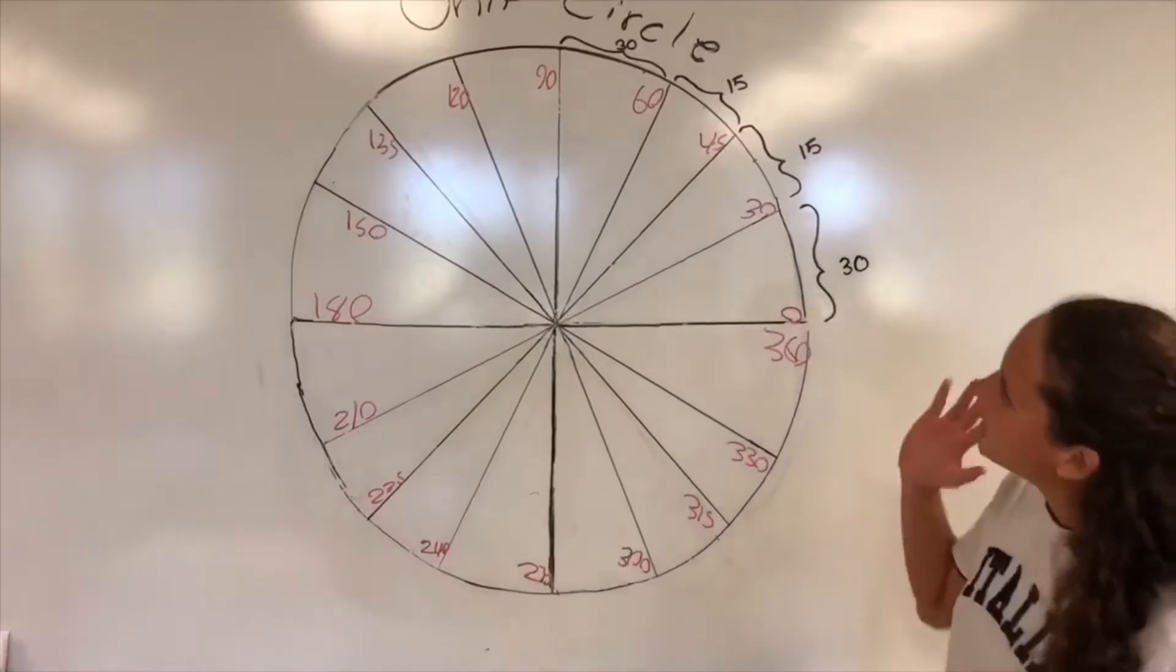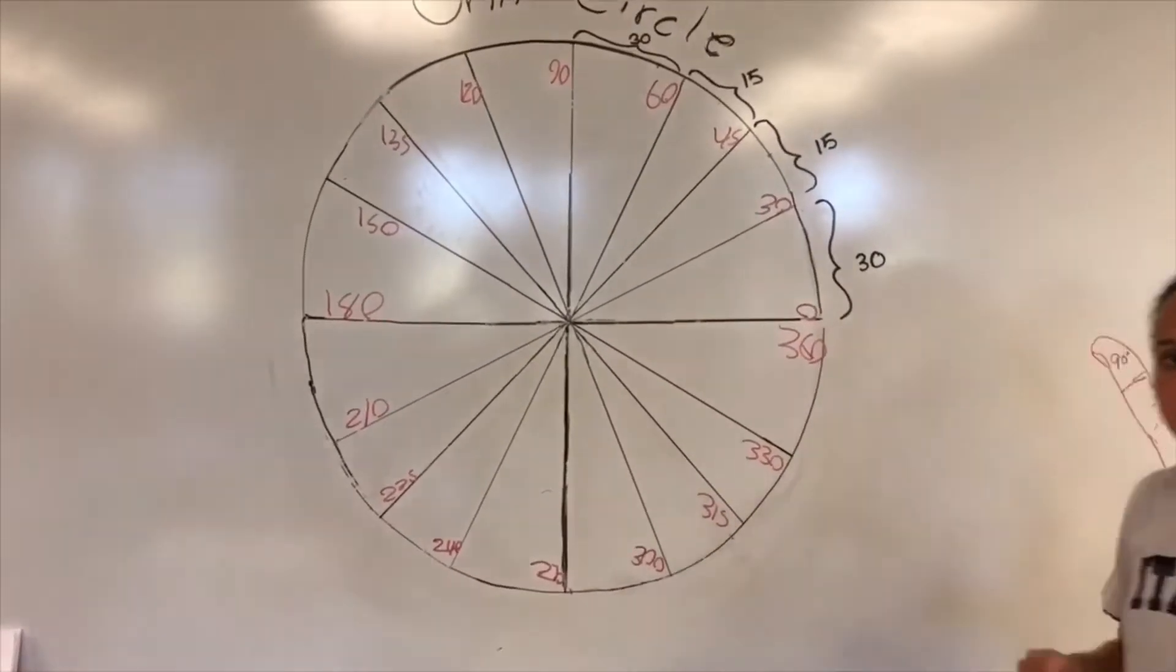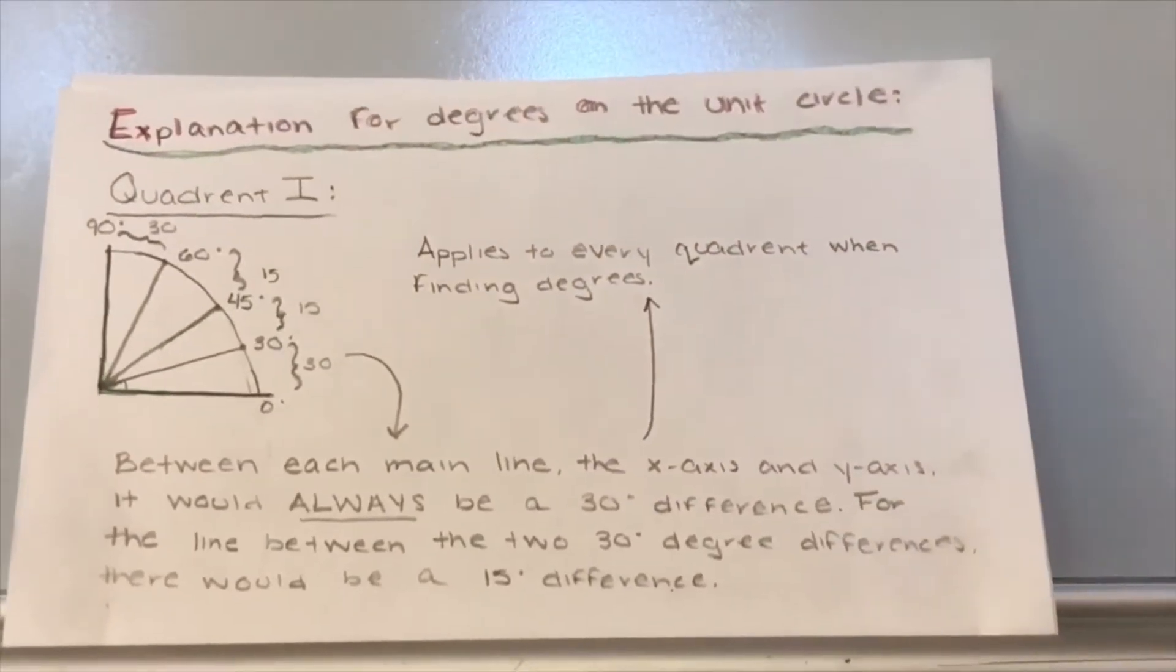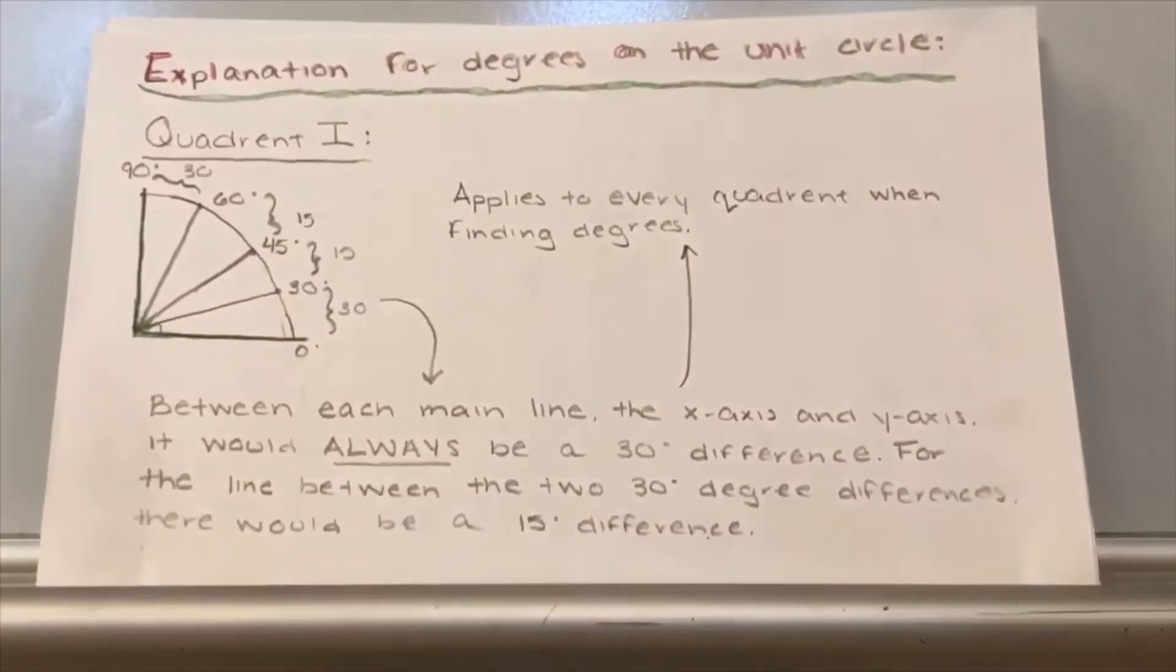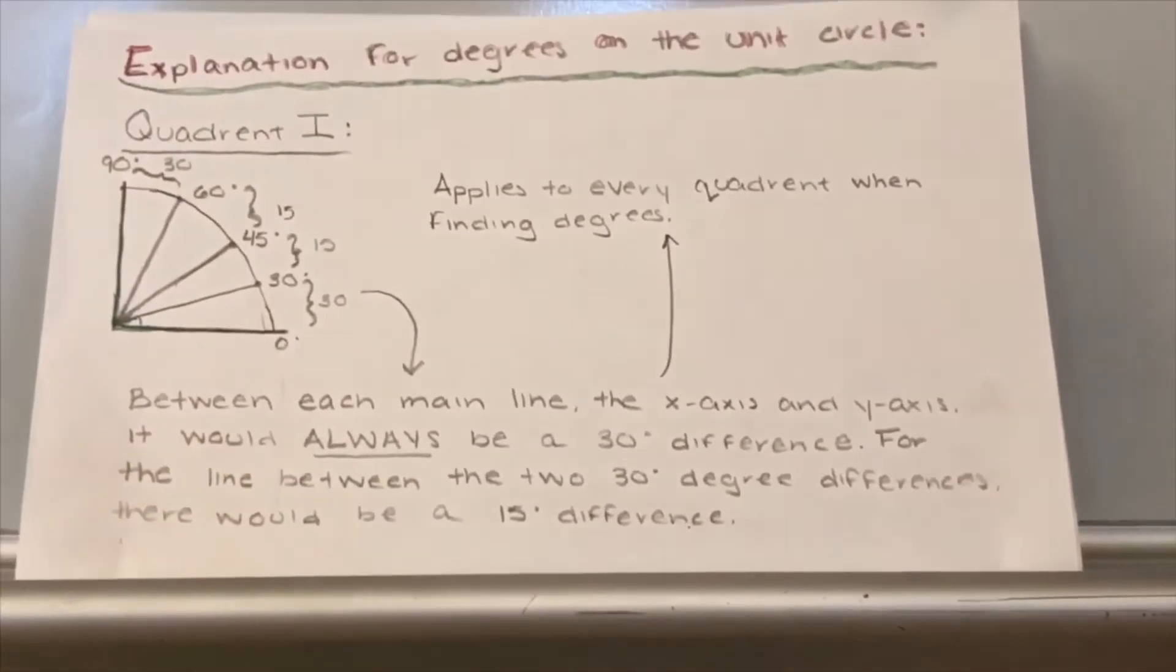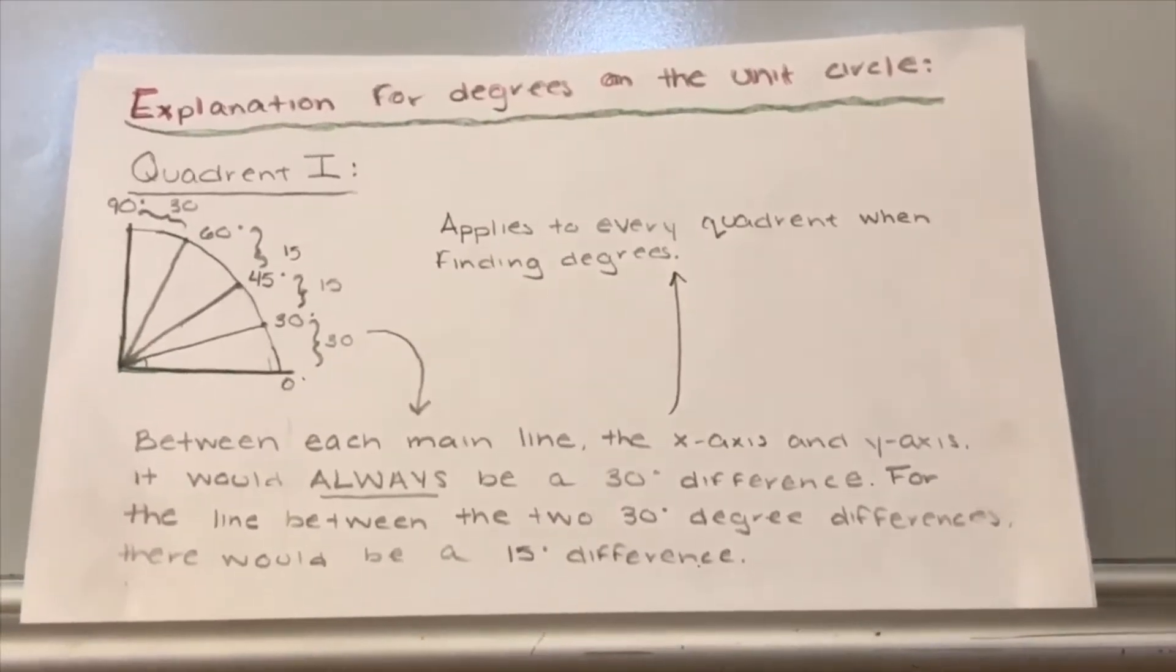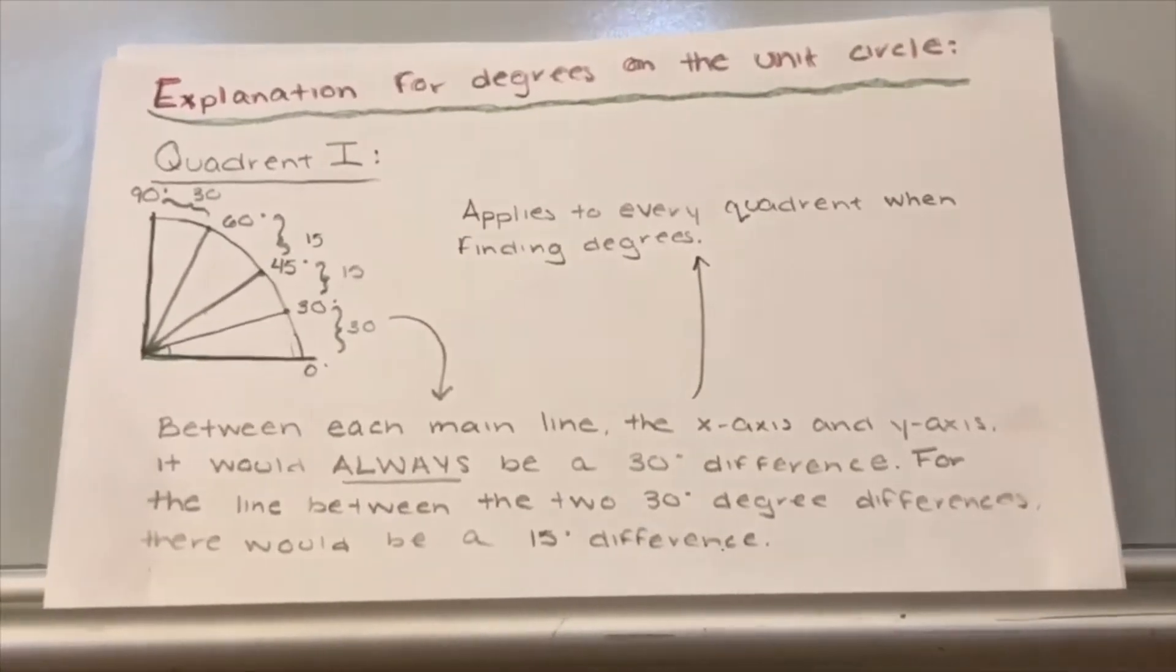Hey guys, it's Megan and this is the unit circle with the degrees. And the explanation is going to be next. This is the explanation for degrees on the unit circle. And as you can see, this is an example for the first quadrant. And when you add the degrees together or subtract them, you get spaces in between. And it will always apply for each quadrant for your degrees.